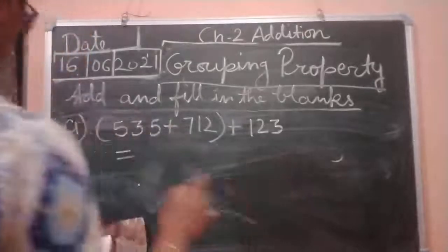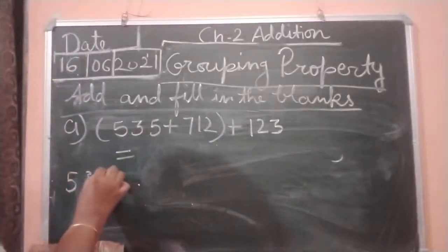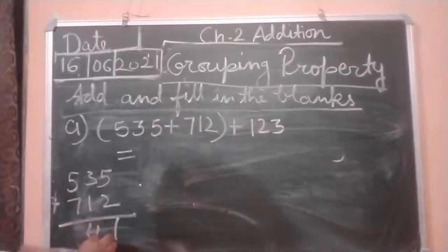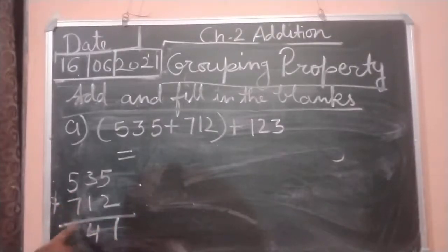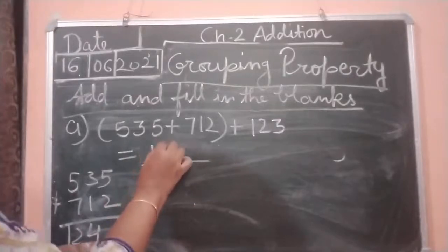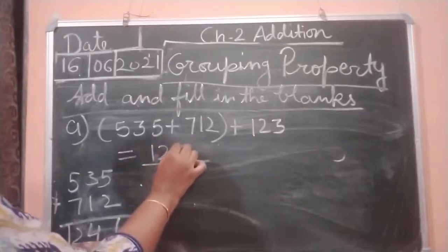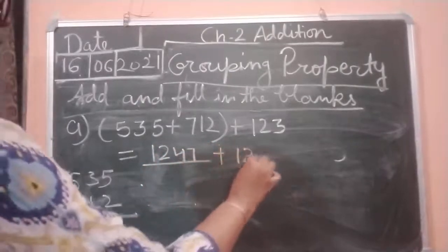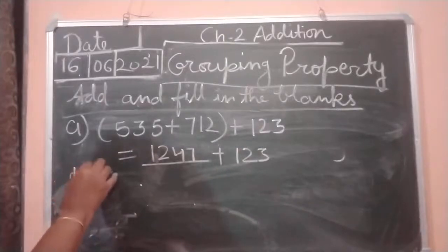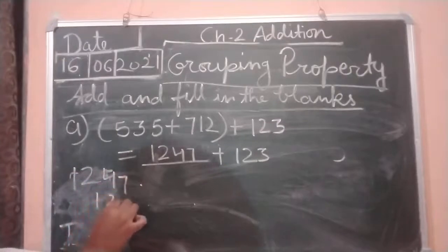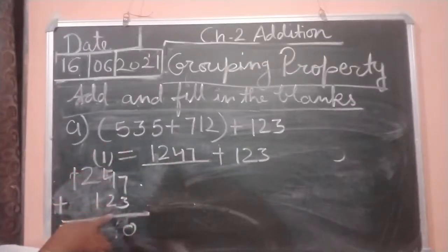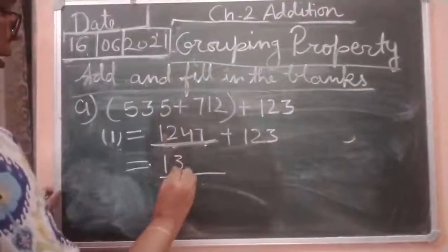So we will add 535 and 712 first. Five plus two is seven; three plus one is four; five plus seven is twelve — so we write 1,247. Then we add 1,247 plus 123: seven plus three is ten, carry one; four plus two is six, plus one is seven; two plus one is three; and one. The answer is 1,370.